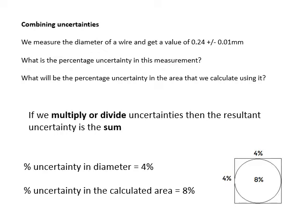If you work out the area, what will be the percentage uncertainty in the area? Well, if you're multiplying quantities, you add together the uncertainties. I'll say it again - if you're multiplying quantities together, then the uncertainties for those quantities you add them together. So the uncertainty in the diameter is 4%, the uncertainty in the area is 8%, because you add them together.